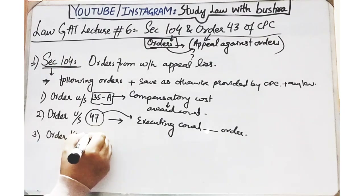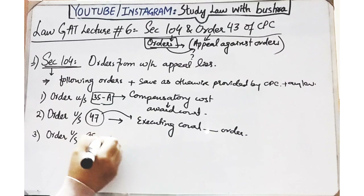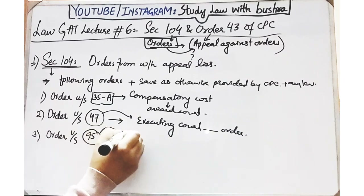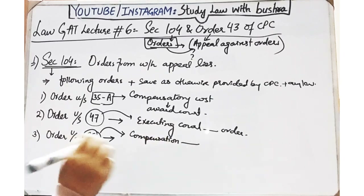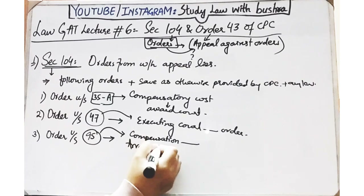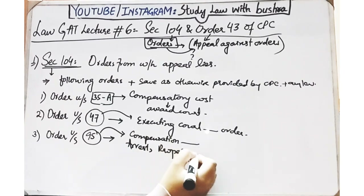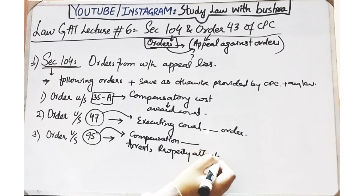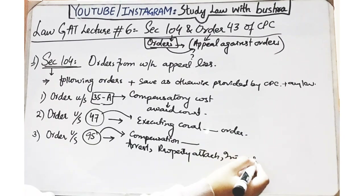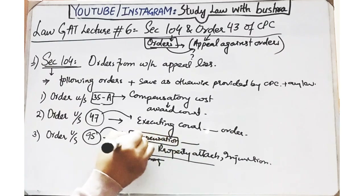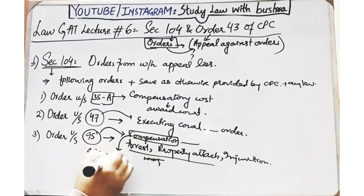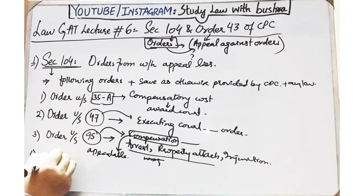Next clause kehti hai: order under Section 95 of CPC. Section 95 bhi compensatory cost se deal karta hai - agar kisi bande ko arrest karne ka, ya kisi bande ki property ki attachment se related, ya kisi injunction ka order pass kar diya gaya ho, aur baad mein pata chale ke woh order ghalat tha ya use reverse kar diya jata hai, to aisi surat mein jo compensatory cost award hui hai uske against bhi appeal file kar sakti ho.